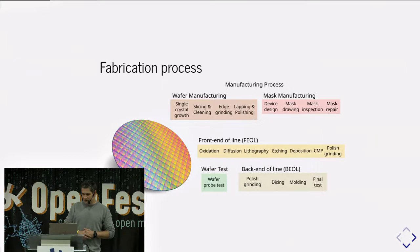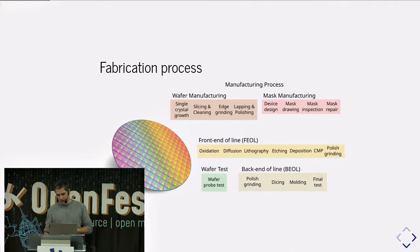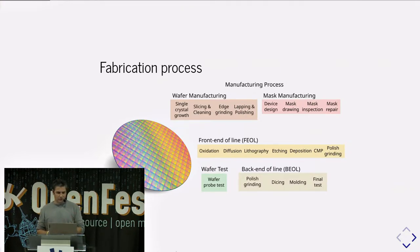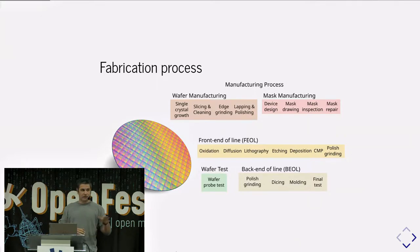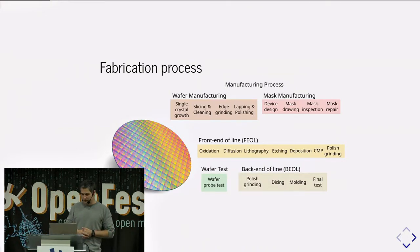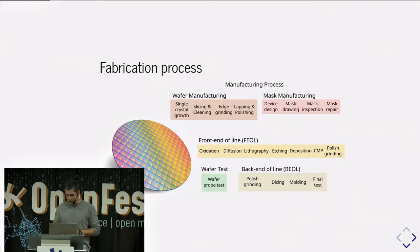Once we have the masks, manufacturing starts with the front end of line, where the transistors are laid out. The usual processes include oxidation, diffusion, ion implantation, lithography, etching, deposition, and chemical mechanical polishing. At the end you get transistors which are not yet interconnected. Throughout the whole process, wafer tests are done to verify that each step is proceeding correctly.